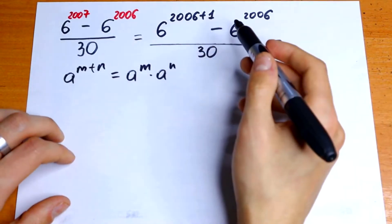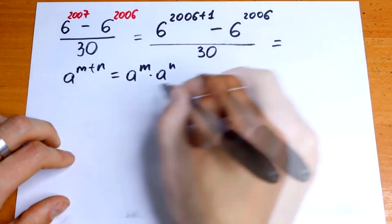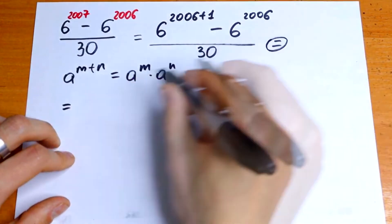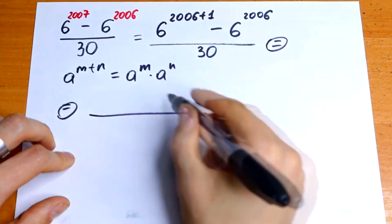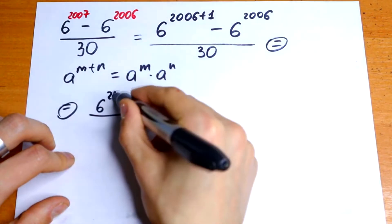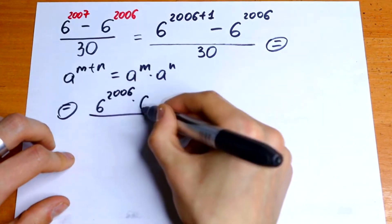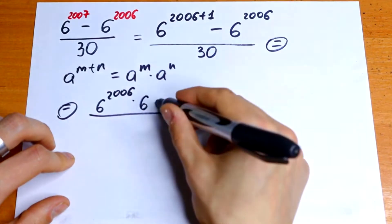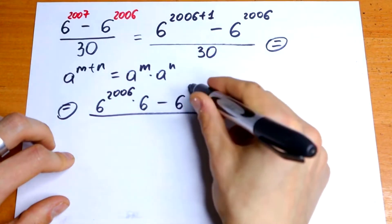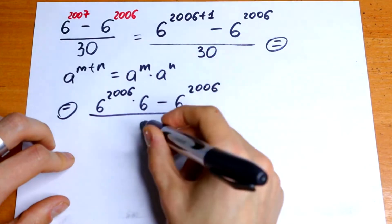So let's use this rule and let's break this power right here. So we will have 6 to the 2006 power times 6 to the first power, I'll write it 6, minus 6 to the 2006 power over 30.